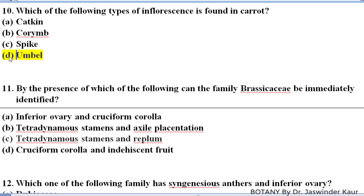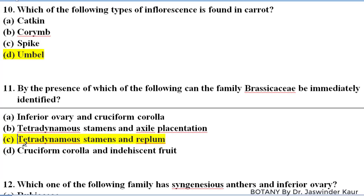By the presence of which of the following can family Brassicaceae be immediately identified? The particular character of Brassicaceae by which it can be easily identified is tetradynamous stamens and the replum. In tetradynamous stamens, they are grouped as four plus two, and replum is a false septum.